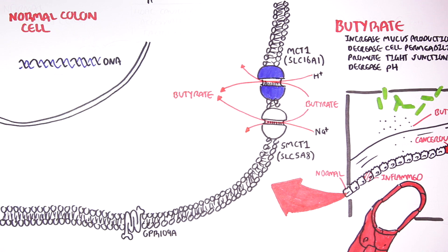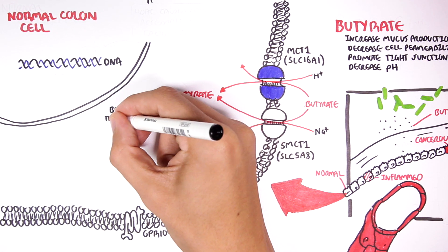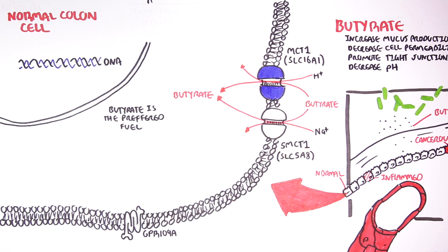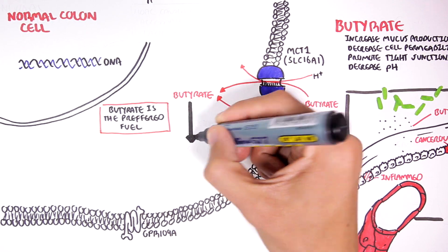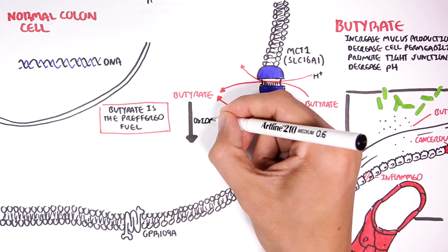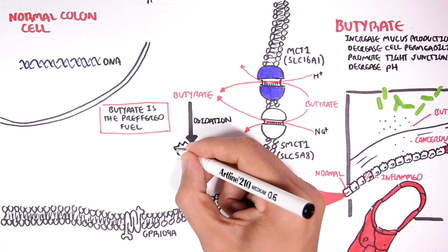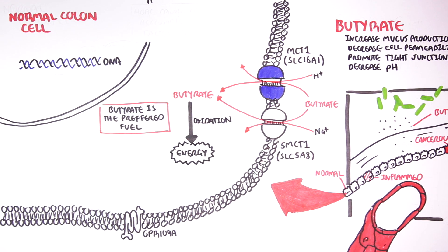Butyrate is the preferred fuel in colon cells, used preferentially over glucose. Butyrate is oxidized in the colon cells to produce energy, maintaining colon cell integrity and health.